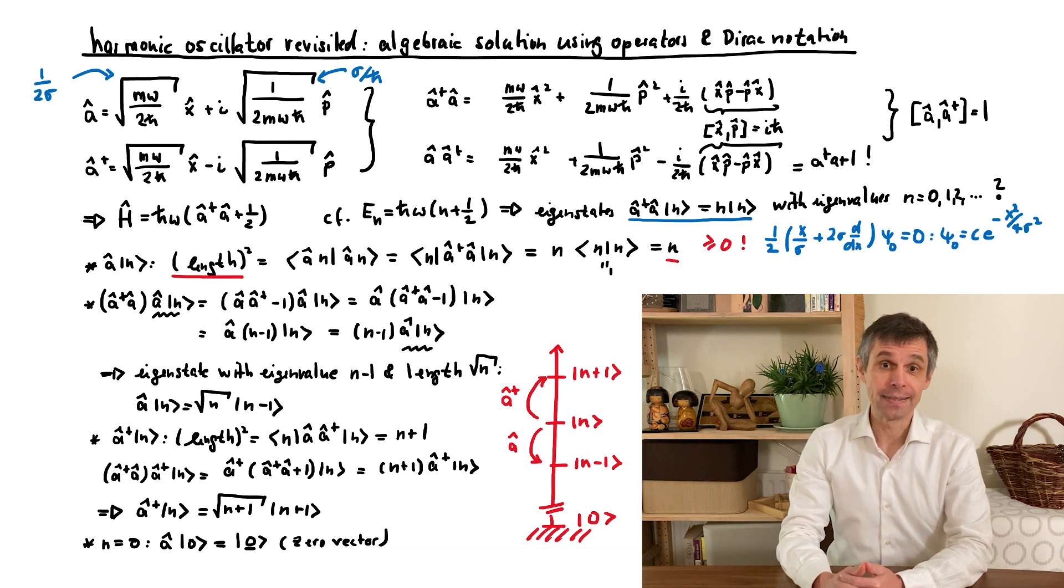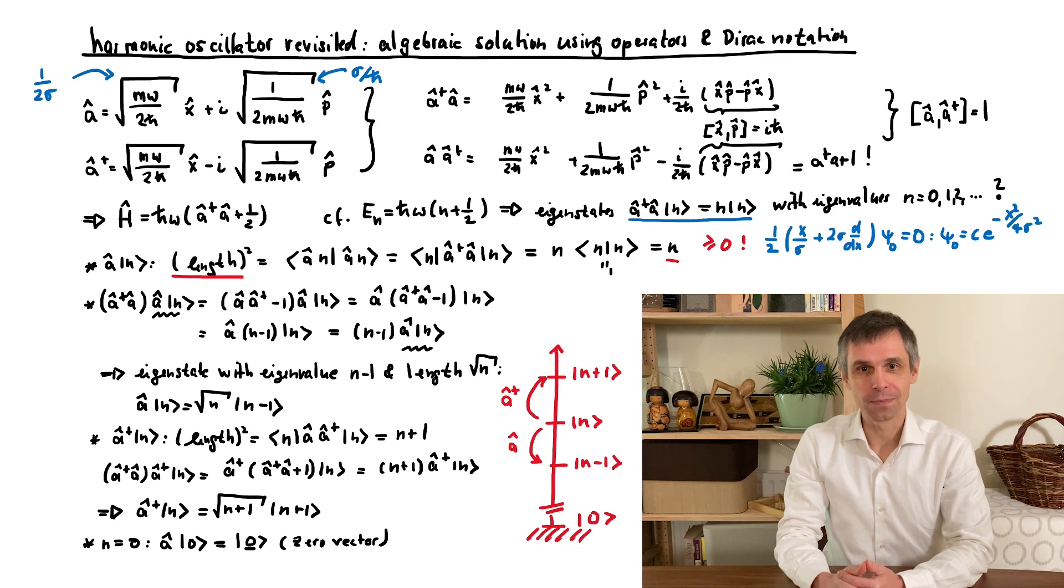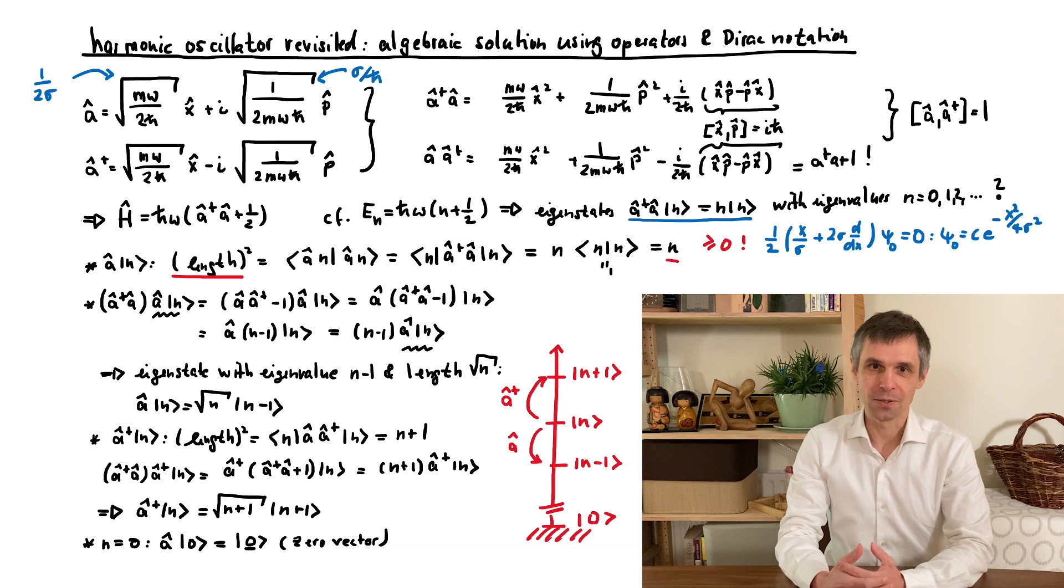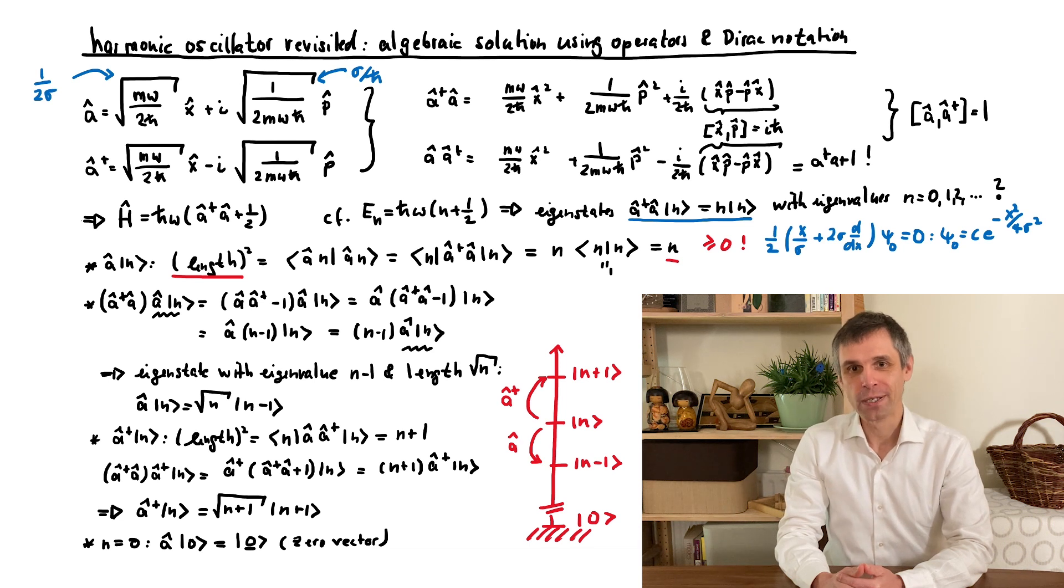The operators A and A-dagger are used in many other settings, for instance in quantum optical systems in which photons interact with matter. In this context, the operator A destroys the photon of energy h-bar-omega and A-dagger creates such a photon, while the number operator counts the number of photons.